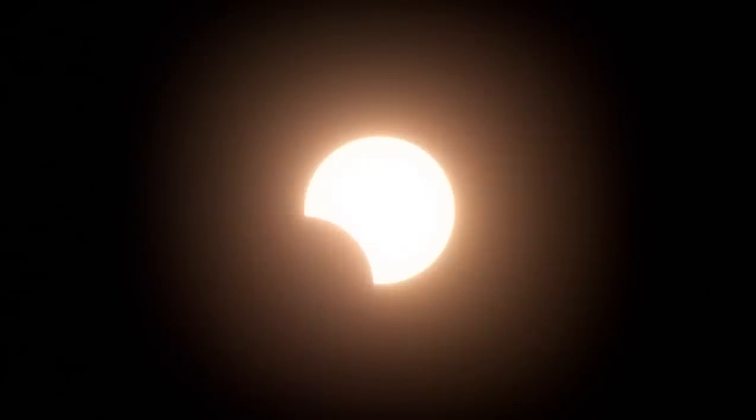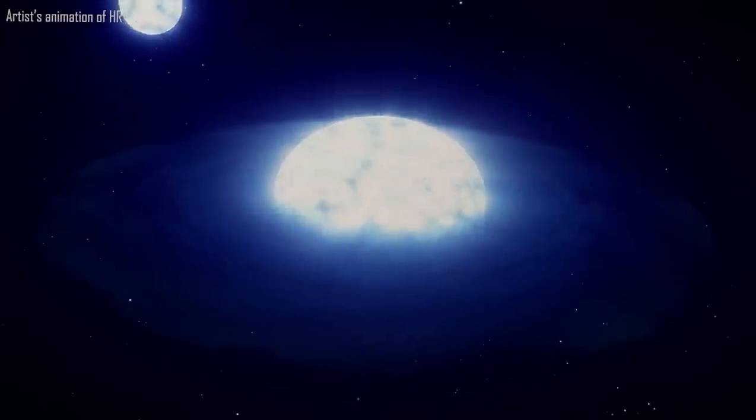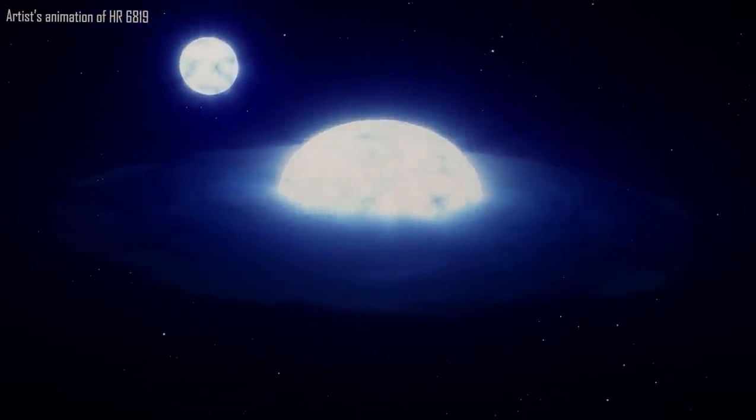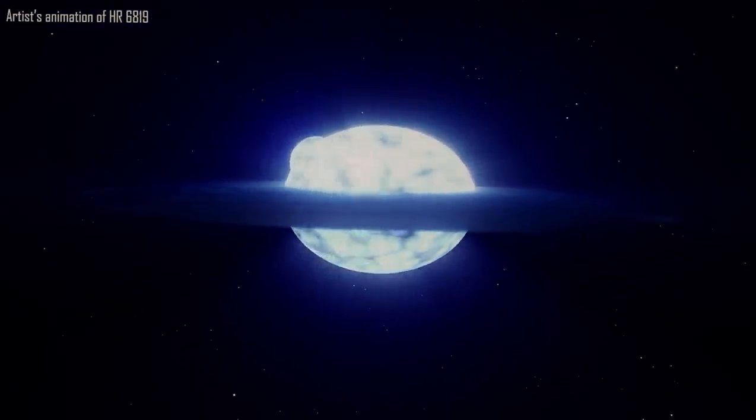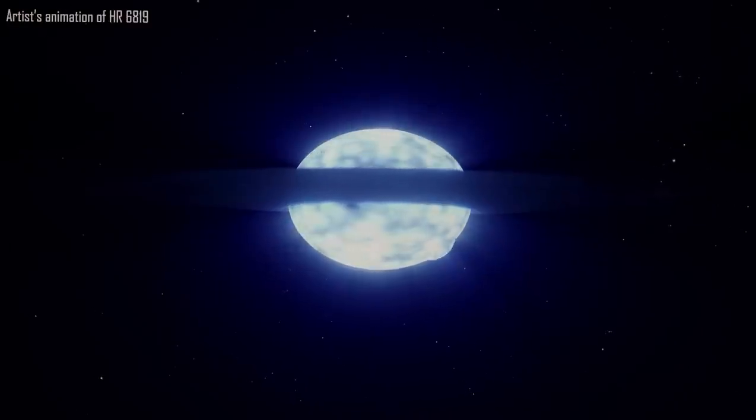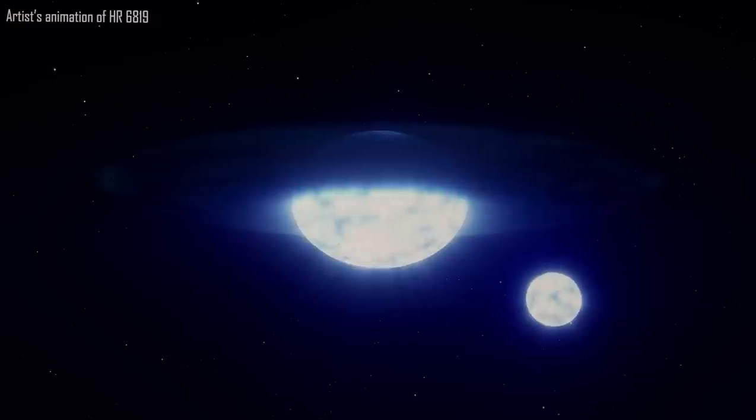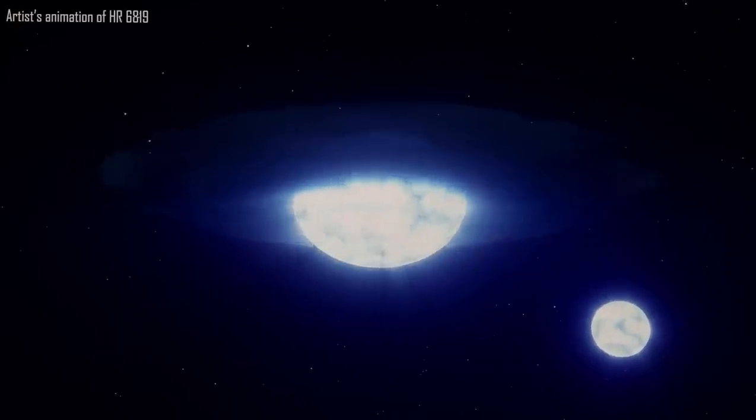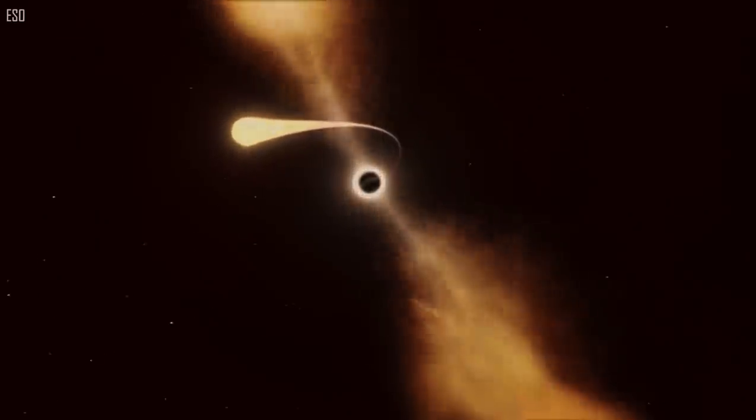A solar eclipse occurs on Earth when the moon moves in front of our sun. The black hole would occasionally cover the outer star on a hypothetical planet circling the inner star in HR 6819. But the black hole would operate as a magnifying glass, focusing the light from the outer star rather than obstructing it. In the planet's night sky, it would produce what scientists refer to as a gravitational lens. This peculiar eclipse would appear to observers as a magnified bright disk encircled by a completely black ring.